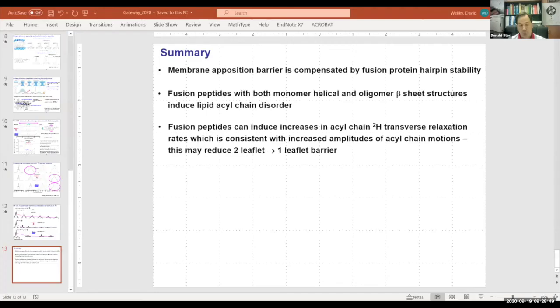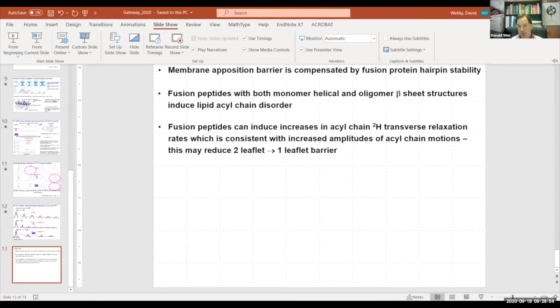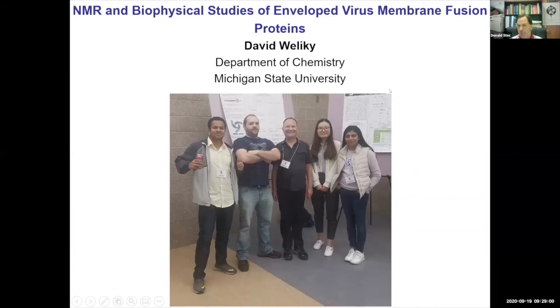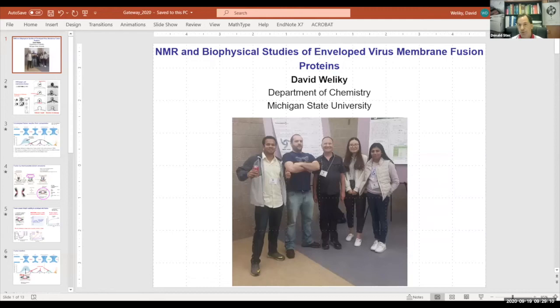The speaker will be Professor David Wilkie from Michigan State University. Professor Wilkie obtained a bachelor's degree in chemistry and physics from Swarthmore College and did his PhD at the University of Chicago. He was a postdoc in Rob Tycko's group at NIH, and then moved on to an independent career at Michigan State University in the Department of Chemistry, where he is now full professor. Today Dave will be talking about deuterium NMR evidence for lipid acyl chain disorder interacting with viral fusion peptides.